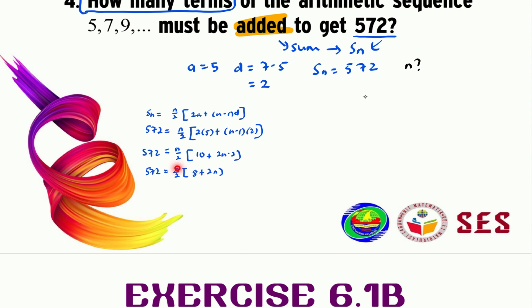So what we can continue is somehow we should expand this n over 2 to the inside the bracket, and eventually we should obtain 572 equals 4n plus n squared.